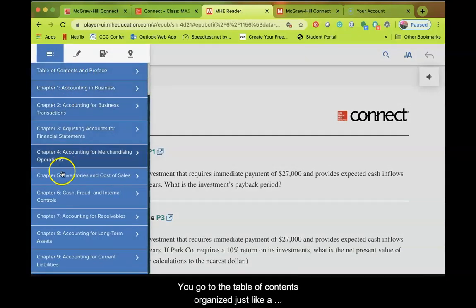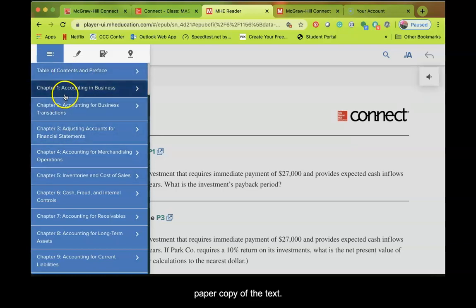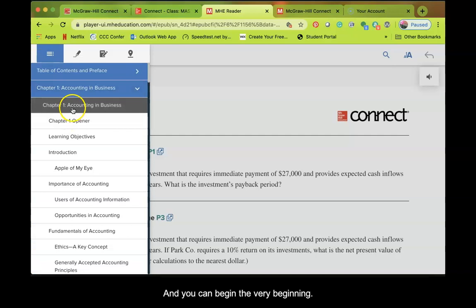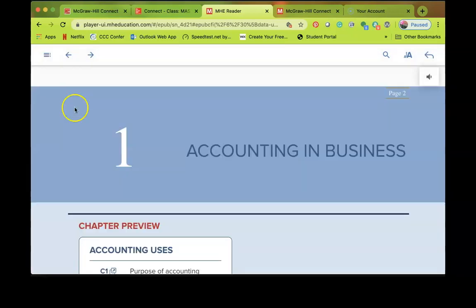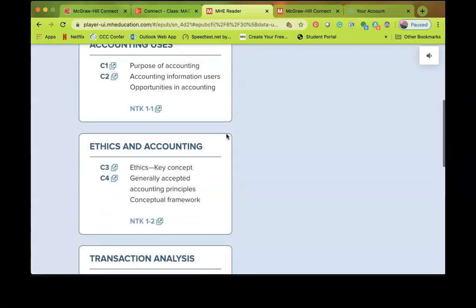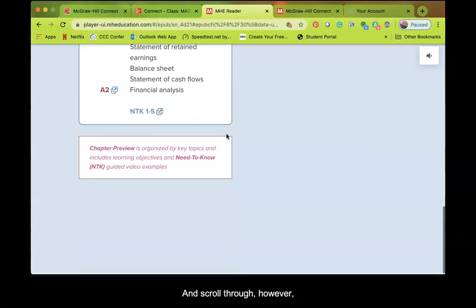I normally use the eBook. If you click on the upper hand, you go to the table of contents. It's kind of organized just like a paper copy of the textbook, so Chapter One. And you can begin at the very beginning and you can read it as if you were reading a normal book and scroll through.